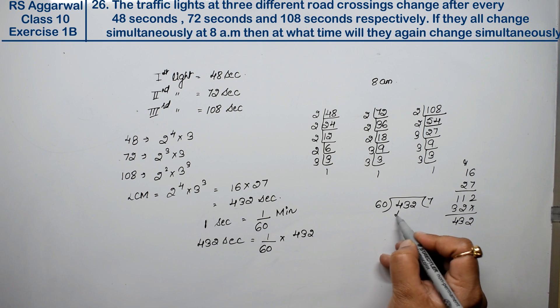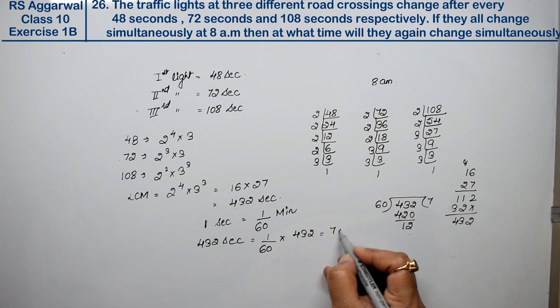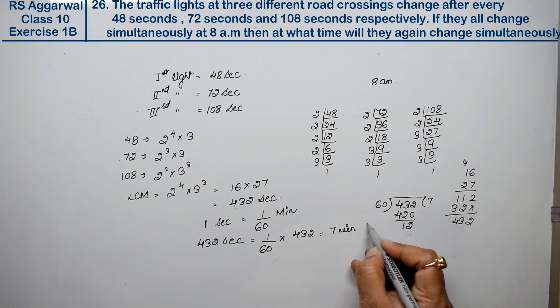60 times 7 is 420, that means 12 remains. So we get 7 minutes and 12 seconds.